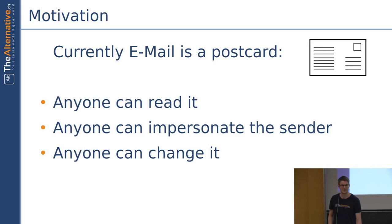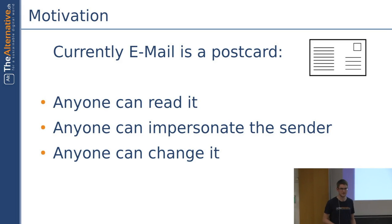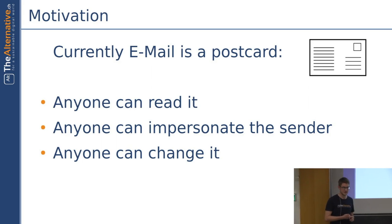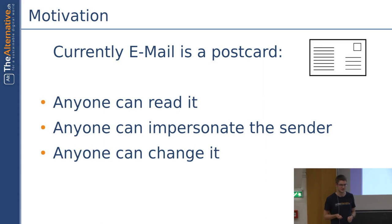So first of all, the motivation. Why are we all here? Currently, if you send an email to one of your friends, this is like a postcard. What does that mean? It means that anybody who transmits the email can read the message. Anybody between you and the recipient can impersonate the sender, so you can't be sure whether the email is really from the person who claims to be. And you can also not be sure whether the content hasn't been modified in the meantime. So anybody is able to change it.